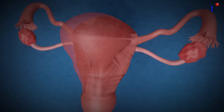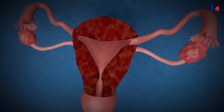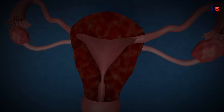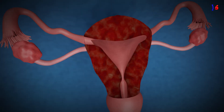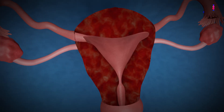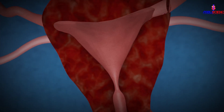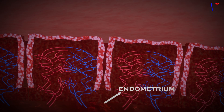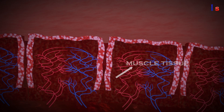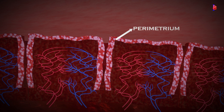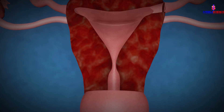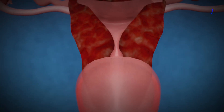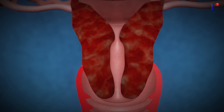The uterus, also known as the womb, is a muscular organ where a fertilized egg implants and develops into a fetus. The uterus has three layers: the inner lining called the endometrium, the middle layer of muscle tissue, and the outer layer known as the perimetrium. The cervix is the lower part of the uterus that connects to the vagina.